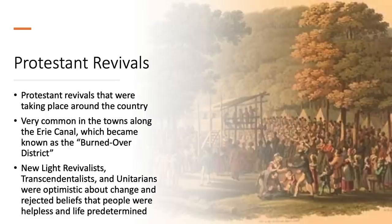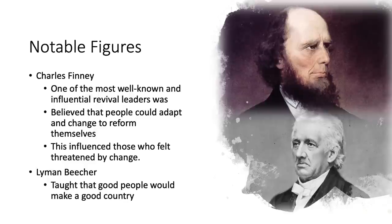This period also saw a shift to a more optimistic tone regarding religion. New Light revivalists, transcendentalists, and Unitarians all shared an optimistic belief about individual change. They rejected Calvinist beliefs that people were helpless and life was predetermined. Instead, they believed people could change. One of the most well-known religious figures was revival leader Charles Finney, who believed people could reform themselves. Another figure was Lyman Beecher, who taught that good people would make good countries, and his family would be involved in many reform movements.